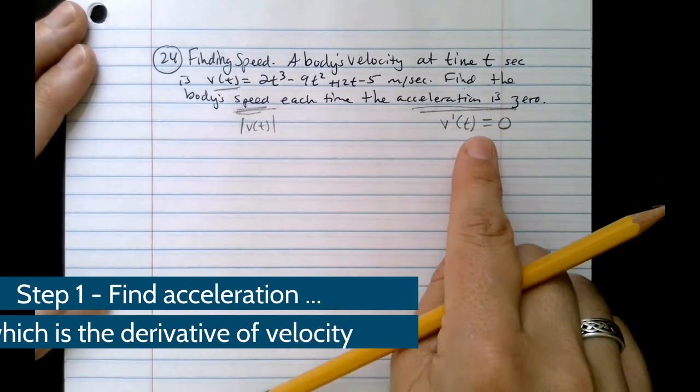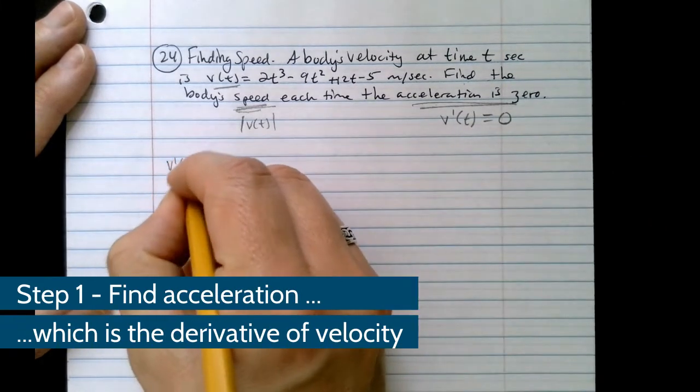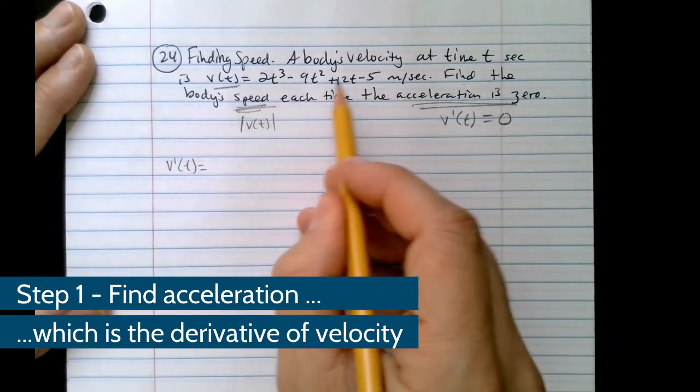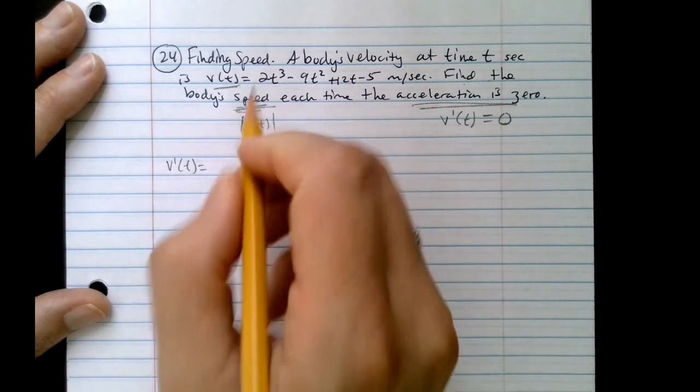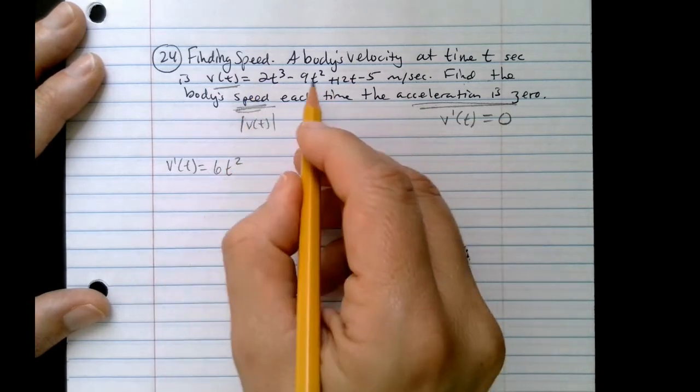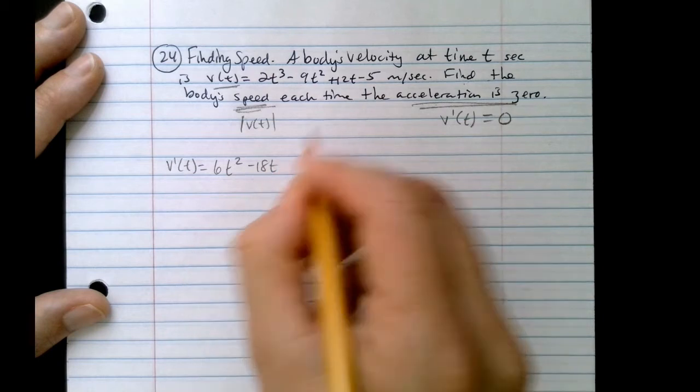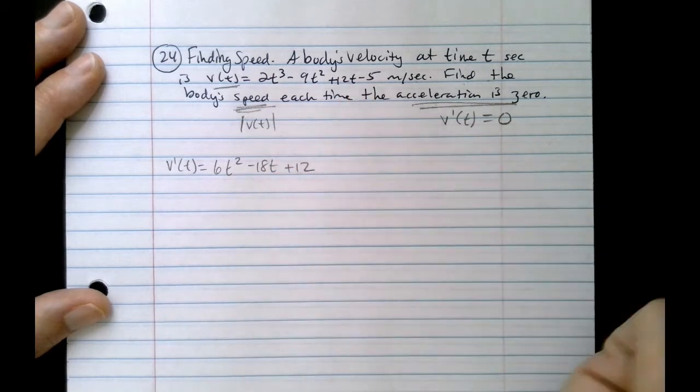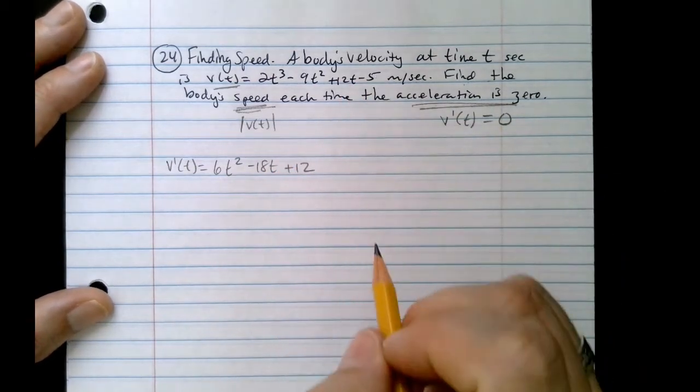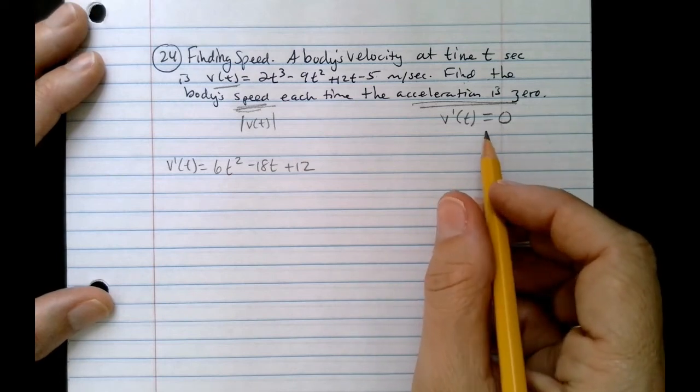So first step, what is the derivative of velocity? Well, it's a nice polynomial, so we're going to use power rule. So this is going to be six t squared. This is minus 18 t, and that's plus 12. The derivative of five is zero. Now we're going to set this equal to zero and solve.